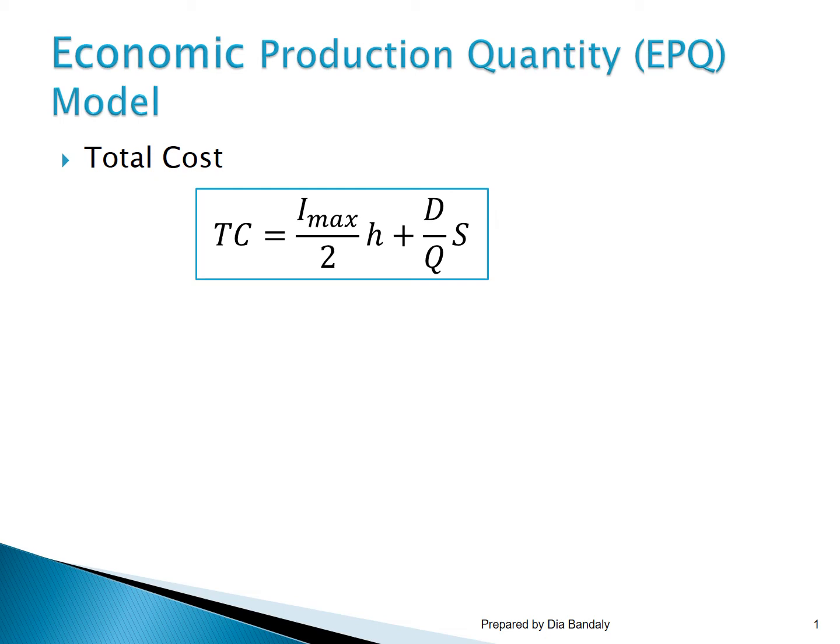Now that we have determined the holding costs and the setup costs, we know that the total cost is the sum of these two costs. That makes our total cost equal to Imax over 2 times H, plus D over Q times S, as you can see in this equation.